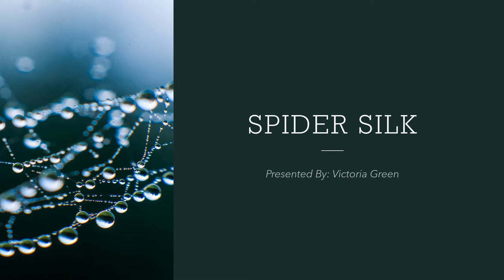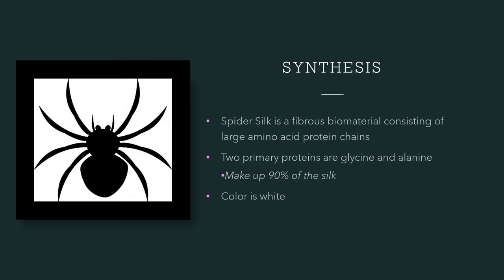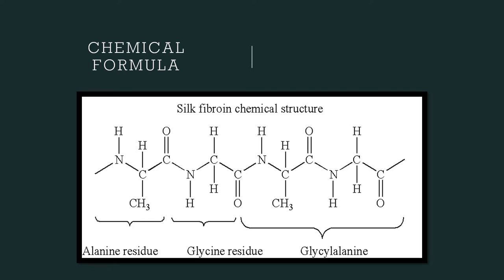Spider silk is a fibrous biomaterial that consists almost entirely of large proteins such as amino acid chains. The two primary proteins which make up the amino acid chains are glycine and alanine. These proteins are used in a repetitive sequence that accounts for more than 90% of the silk. This slide shows the chemical structure of spider silk and represents the three main proteins that make up the amino acid chain.